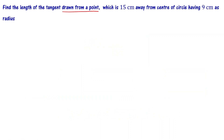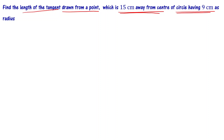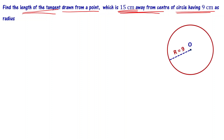Find the length of the tangent drawn from a point which is 15 centimeters away from the center of circle having 9 centimeters as radius. We have to find the length of the tangent drawn from a point 15 centimeters away from the center of a circle having radius 9 centimeters. Let's start by drawing the circle of radius r equal to 9 centimeters, centered at O.